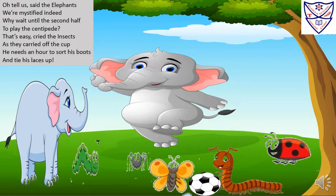In this last stanza, we find a very interesting fact — the elephants are wondered and surprised. They asked the insects why they brought their star player centipede so late. The interesting thing the insects told was that the centipede takes one full hour to wear shoes on all his legs. So this is the reason the centipede came late to play the match.